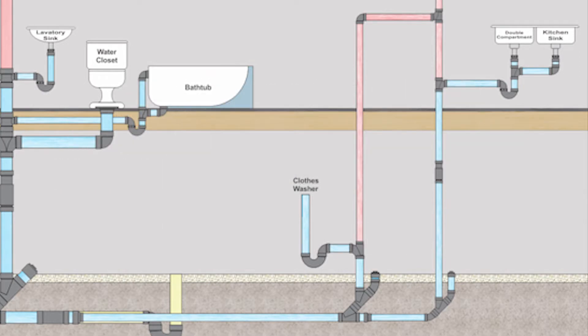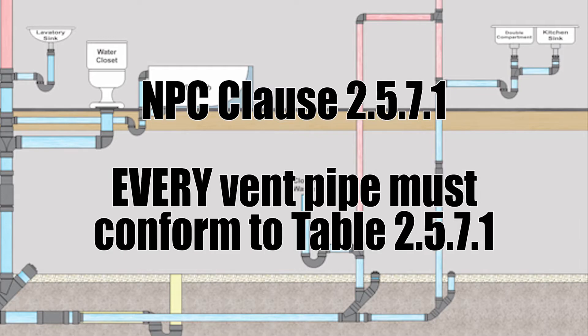Now when it comes to sizing vents, table 2.5.7.1 is of utmost importance. Let's read clause 2.5.7.1. The size of every vent pipe shall conform to table 2.5.7.1.